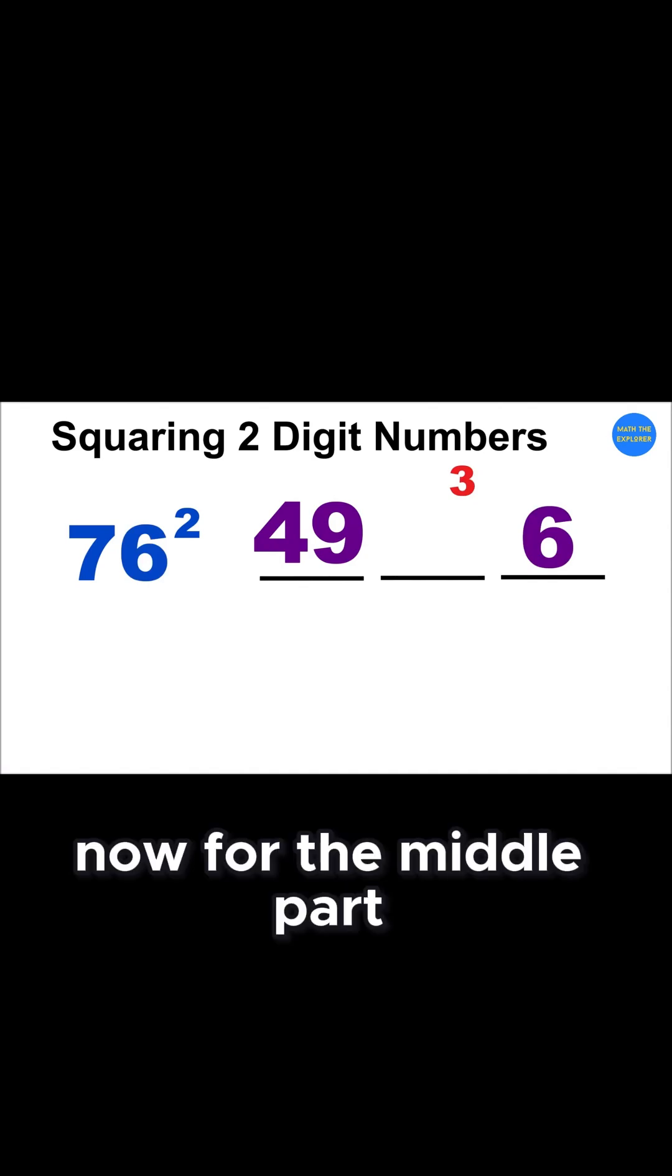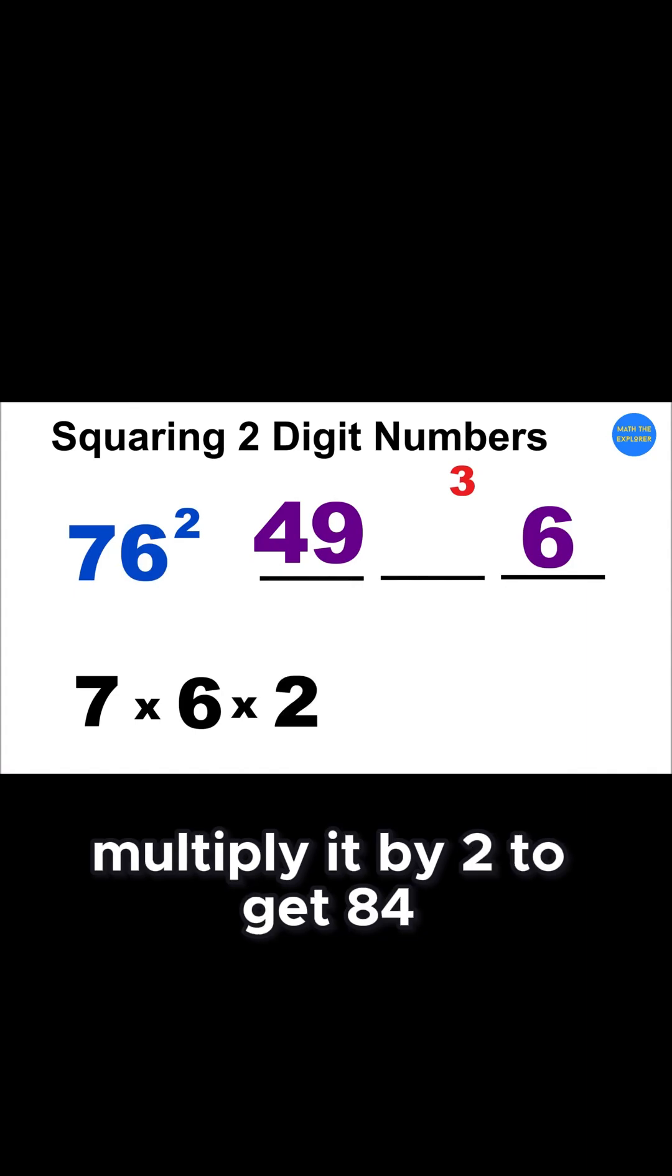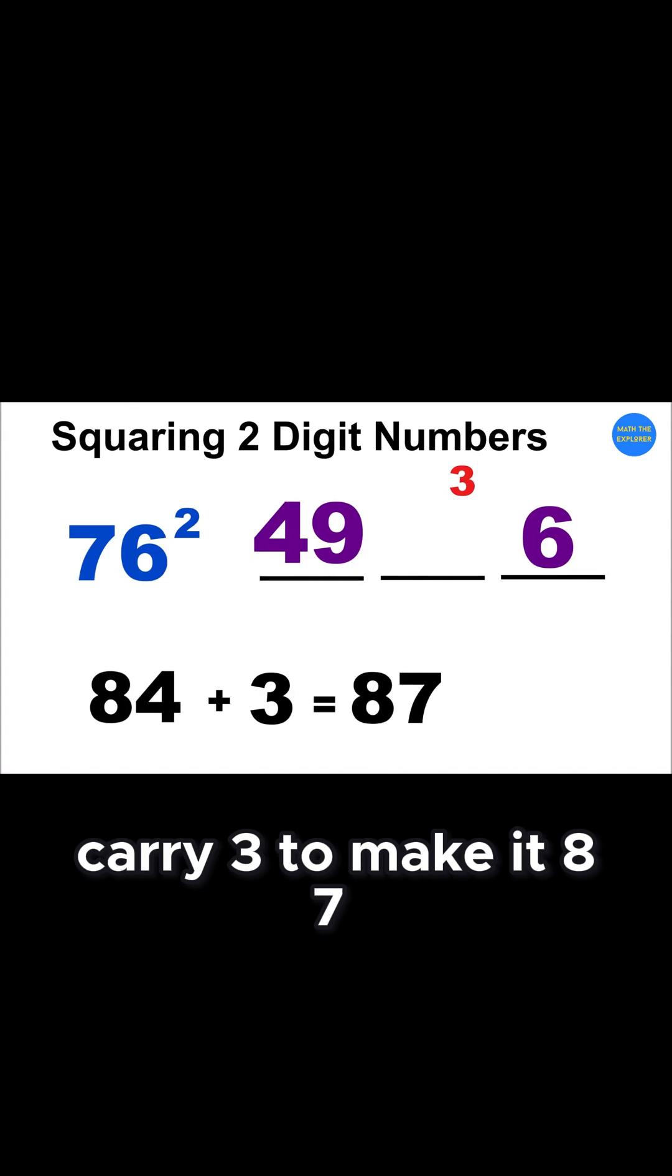Now, for the middle part, multiply 7 by 6, then multiply it by 2 to get 84. Add the carry 3 to make it 87.